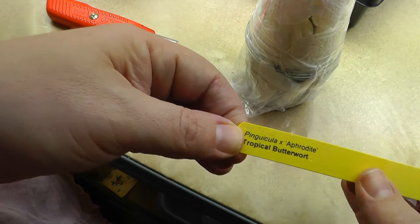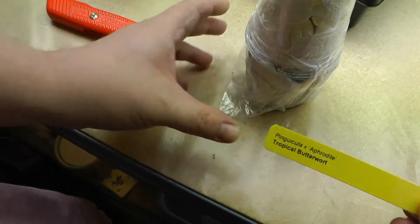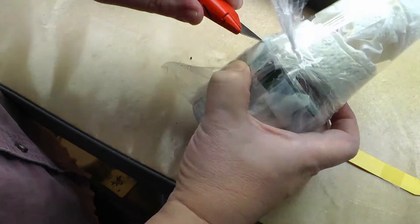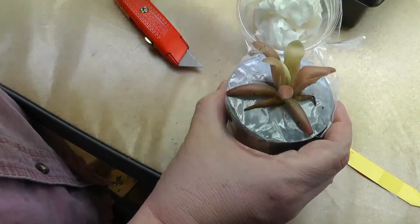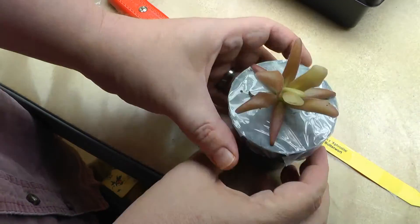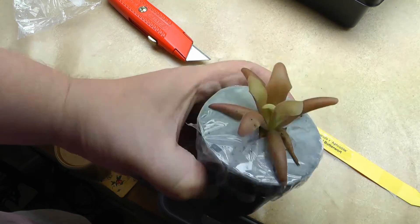And we've got one more, Pinguicula aphrodite. So let's open this one up. It's got a little color to it. Leaves are a little thicker.